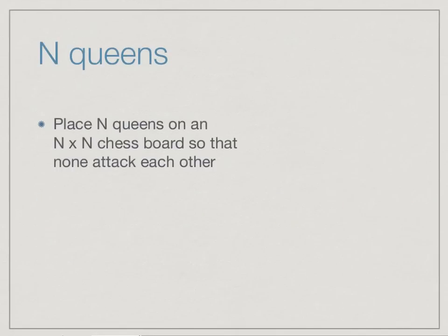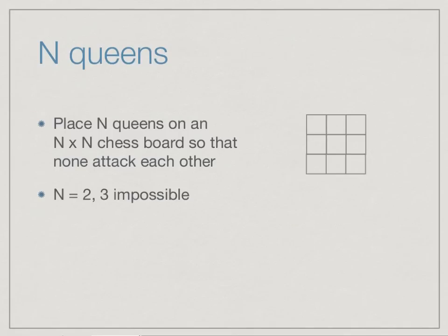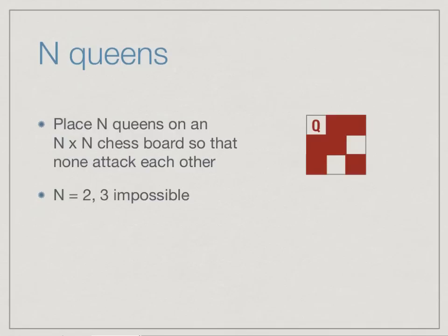We can generalize this question: supposing I have a chessboard with n rows and n columns, can I place n queens so none attack each other? For n=1 the question is trivial. It's easy to see that n=2 is impossible — wherever you put the first queen it attacks all remaining squares, so there's no position for the second queen. It turns out n=3 is also impossible.